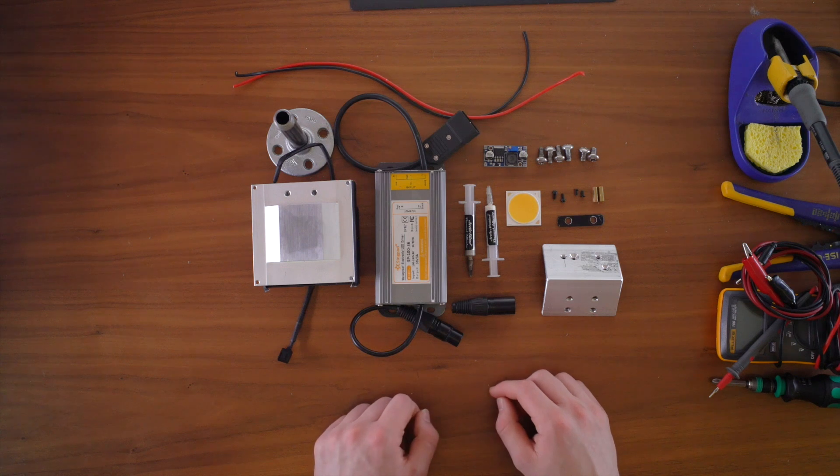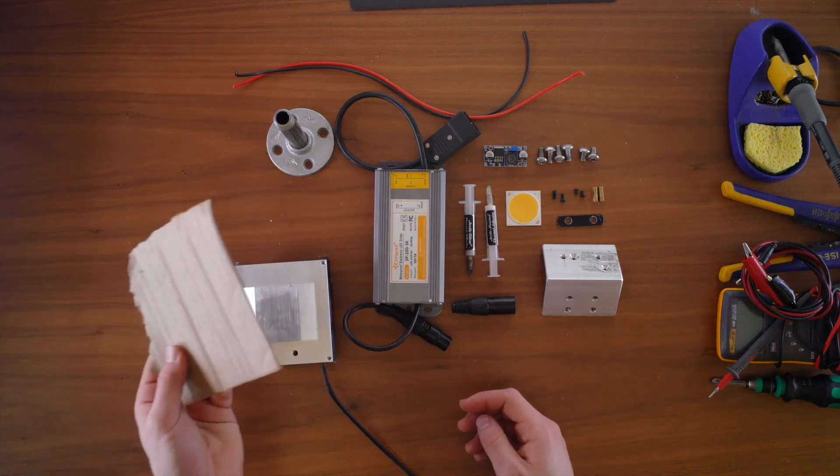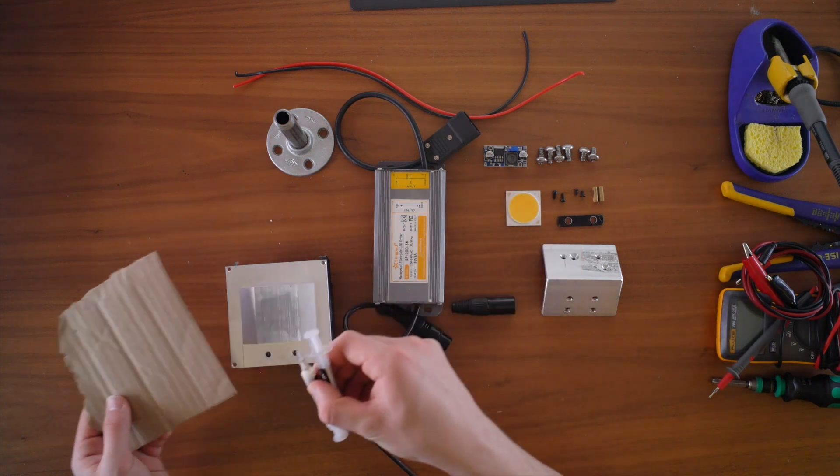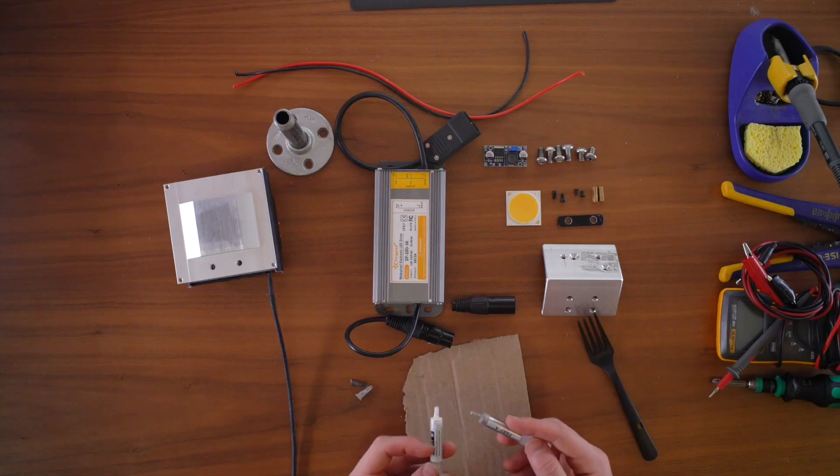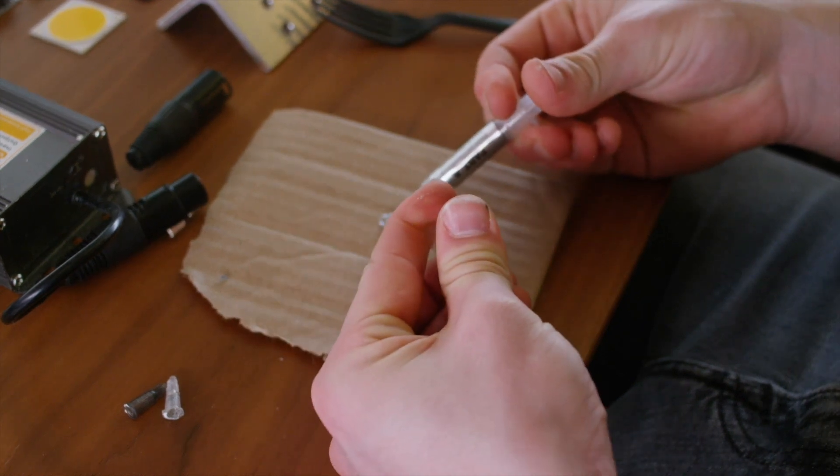The first thing we're going to do is mount the chip to the chiller using thermal epoxy. Now grab some scrap cardboard or something to mix your epoxy on, grab your epoxy, and grab something to mix it with. So open up the epoxy. There's two parts to it. One's a glue, one's a cure to make it dry, and we're going to squirt them out onto this piece of cardboard.